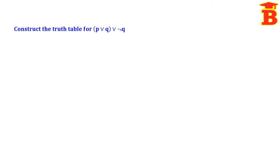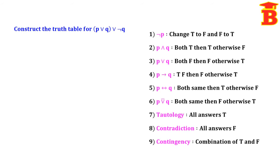Next, construct the truth table for (P OR Q) OR NOT Q. Remember these conditions and we can draw the truth table very easily.